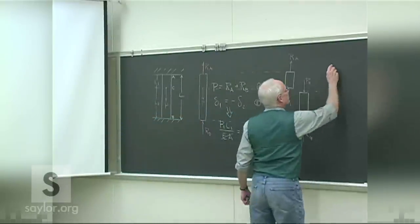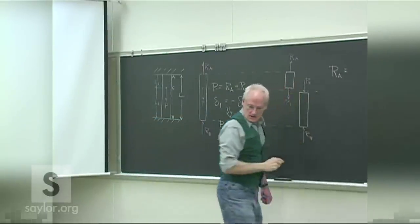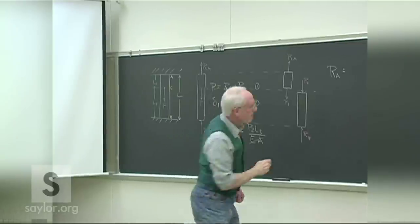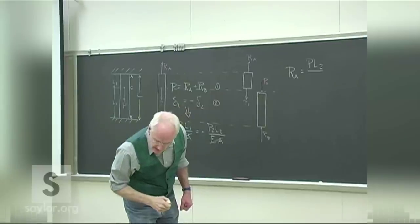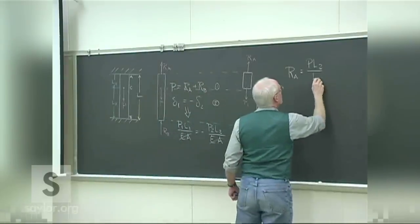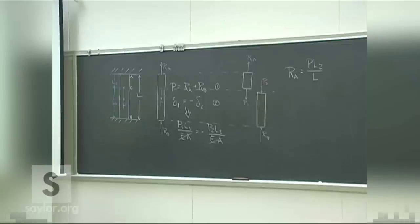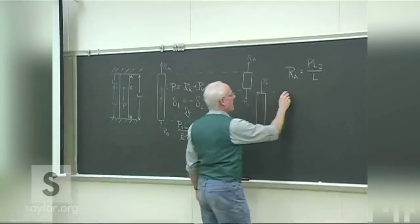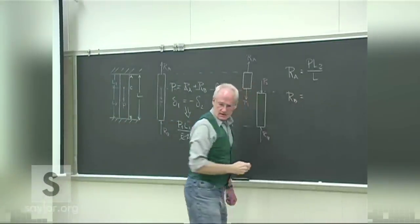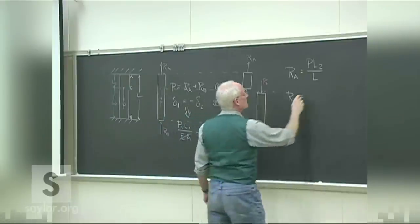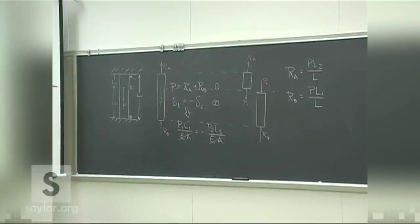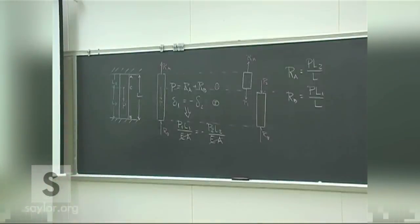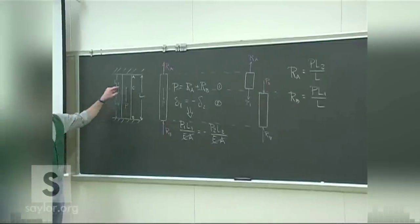The solution is: RA = P·L2 over L, and RB = P·L1 over L, where L is the total length. Interestingly, the reaction at A depends on the length of the lower section L2, and vice versa. L1 and L2 locate the intermediate load. The material and cross-section don't appear in the answer.